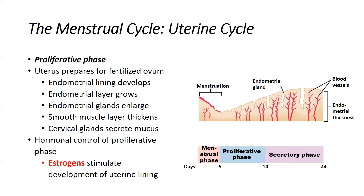The proliferative phase is where the uterus starts to develop itself again. From day 5 to day 14, the endometrial lining thickens, arteries and capillary density increase, enlarged glands secrete mucus, and the smooth muscle layer — the myometrium — increases in thickness. All these changes facilitate fertilization and pregnancy. Cervical glands also increase mucus production.